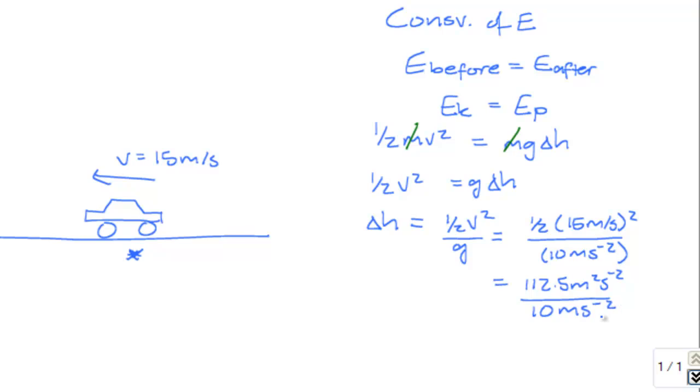And so the seconds squared will cancel from the numerator and denominator. We have m squared up top, which will be reduced to just m, and will cancel with this m from the denominator. And so we end up with a height difference that the car will be able to climb of 11.25 meters.